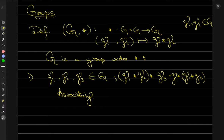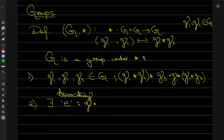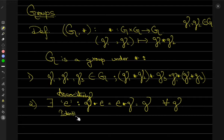The second property is the identity property — there must exist an identity element. There exists some element E such that for any element G from the group, composing G with the identity element E gives back G, and this is true for all G in the group. This property is known as the identity property.